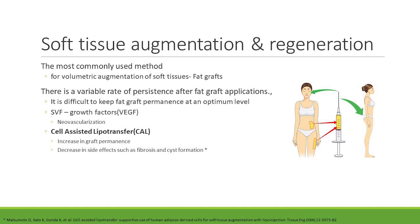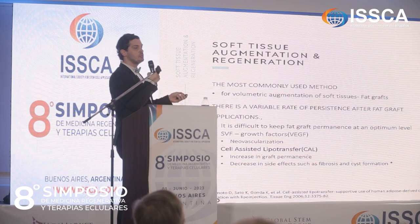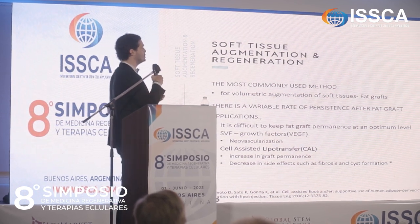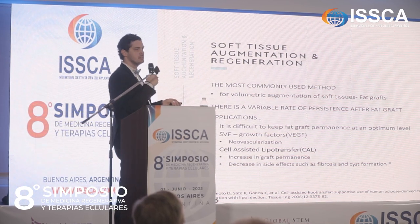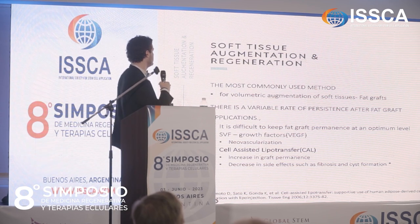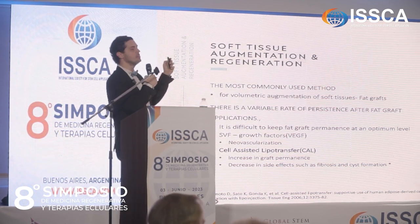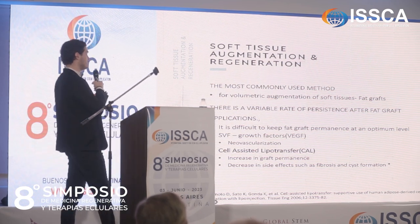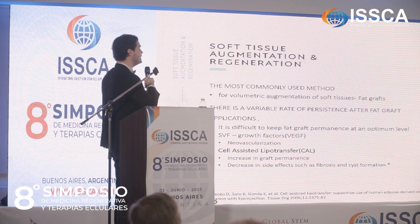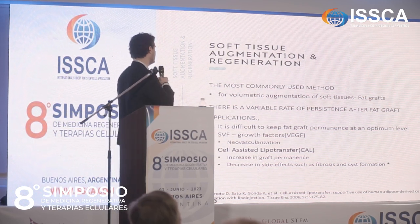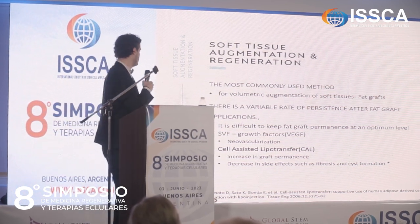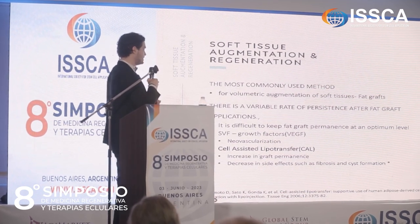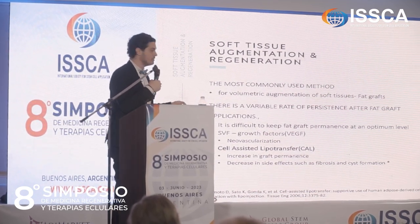The most commonly used method for volumetric augmentation of soft tissues is fat grafting. There is a variable rate of fat graft persistence, and it's difficult to maintain permanence at an optimum level. However, SVF creates neovascularization — when we combine fat graft with SVF, we increase graft permanence so the fat grafts become more permanent after the procedure. We also see decreasing side effects such as fibrosis and cyst formation of fat grafts.